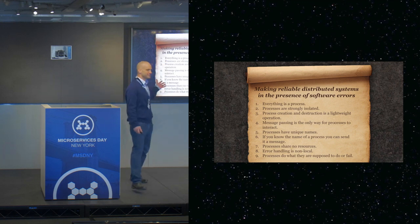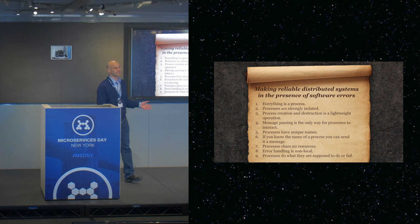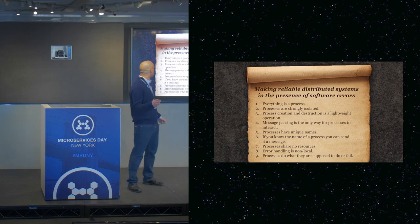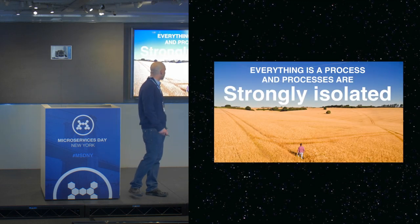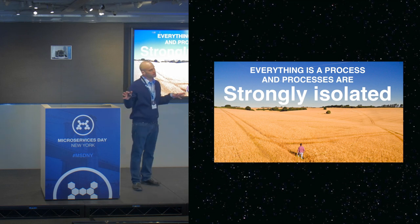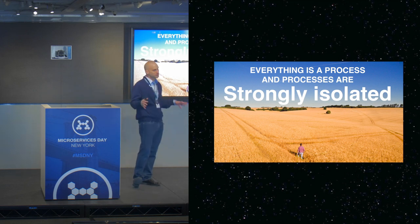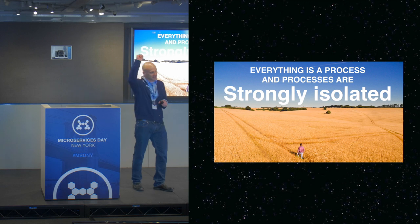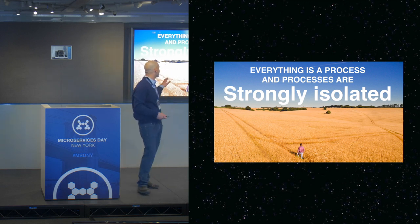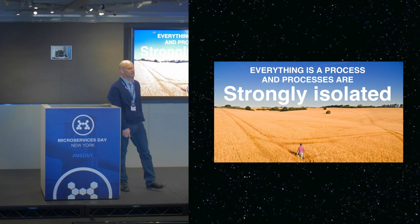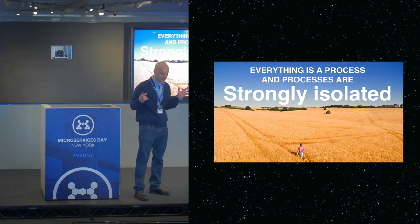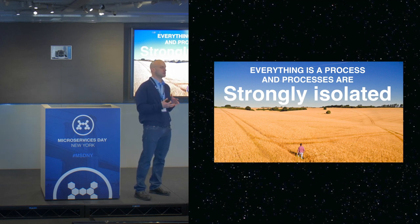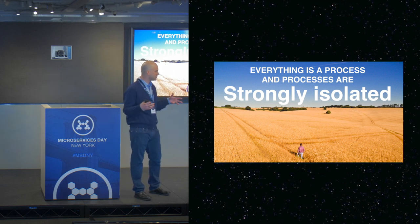When you read these nine items, it sounds like standard microservice architecture. I want to just run through some of them and compare and contrast where we are with Erlang and where we are today. First: everything is a process, and processes are strongly isolated. This is really close to microservices today — basically, take your big problems, break them up into small problems, and isolate them from each other.